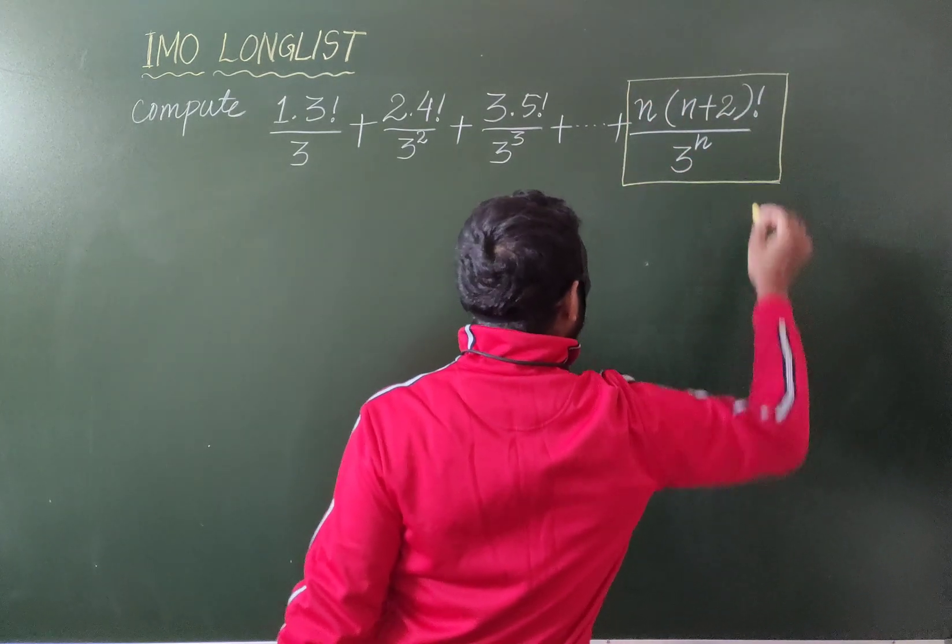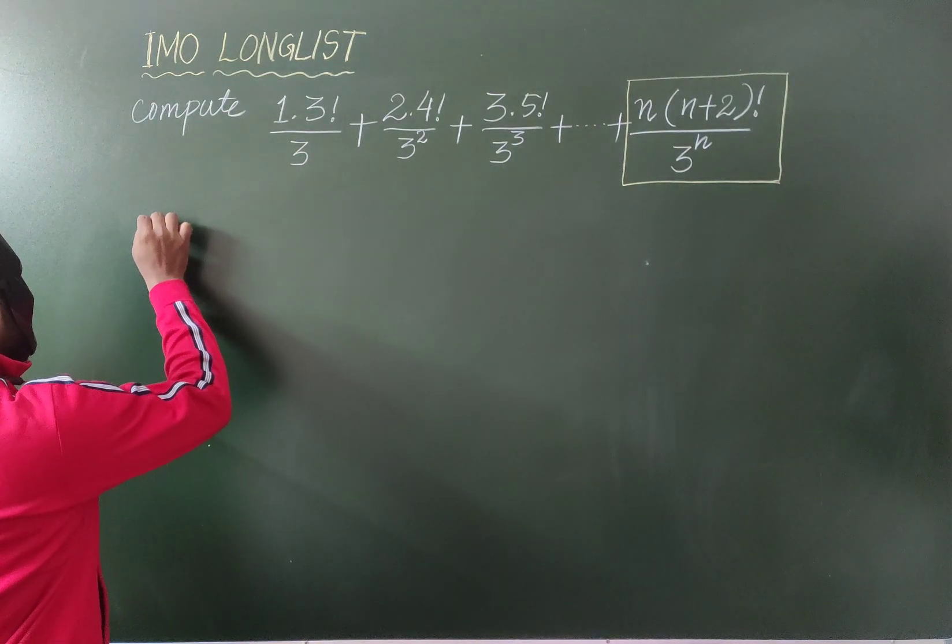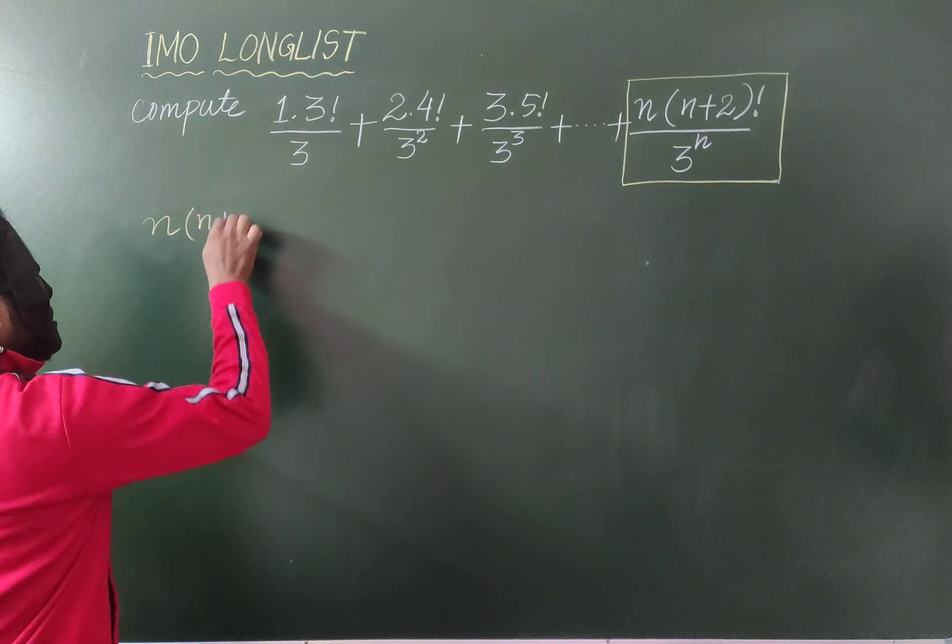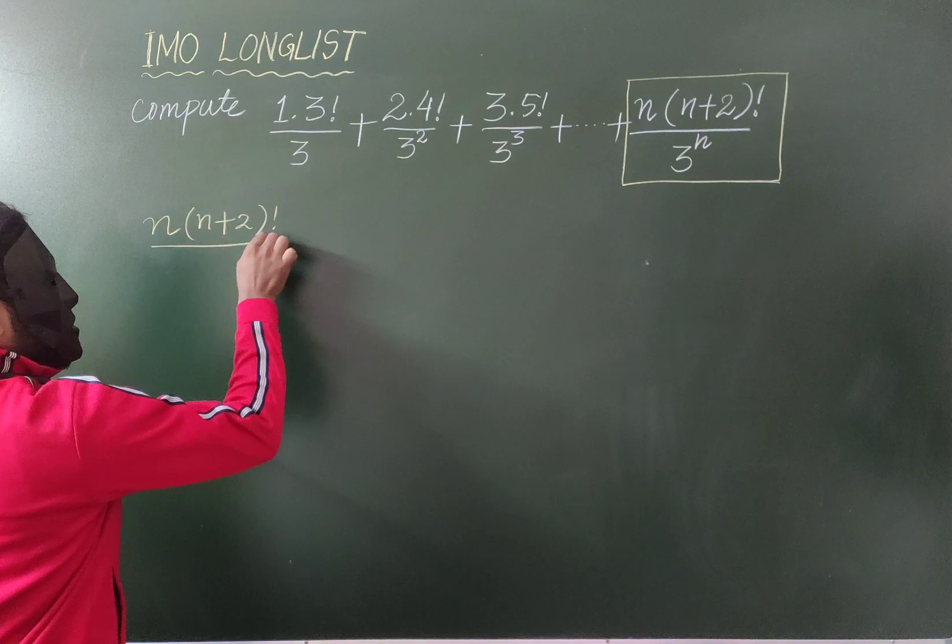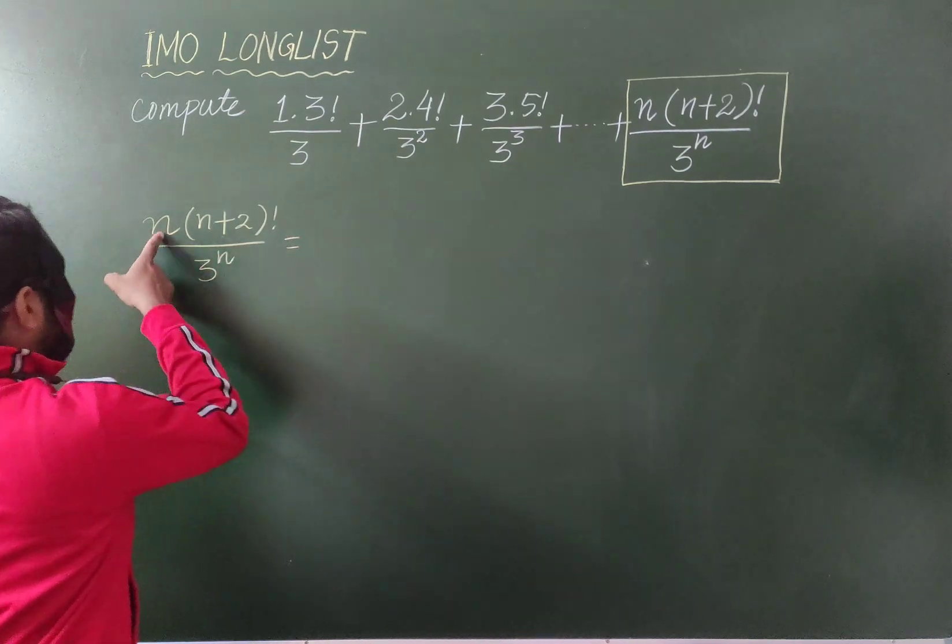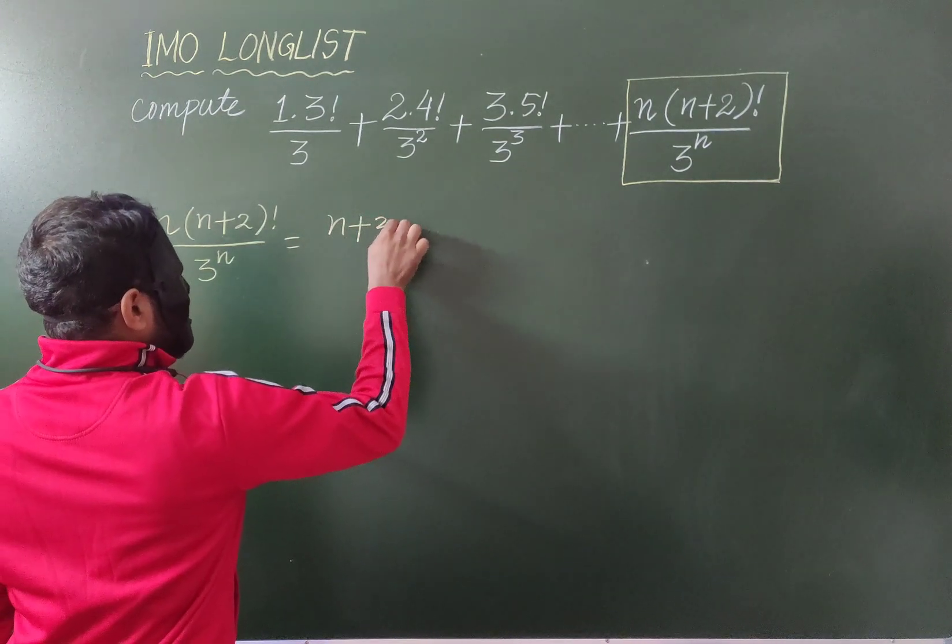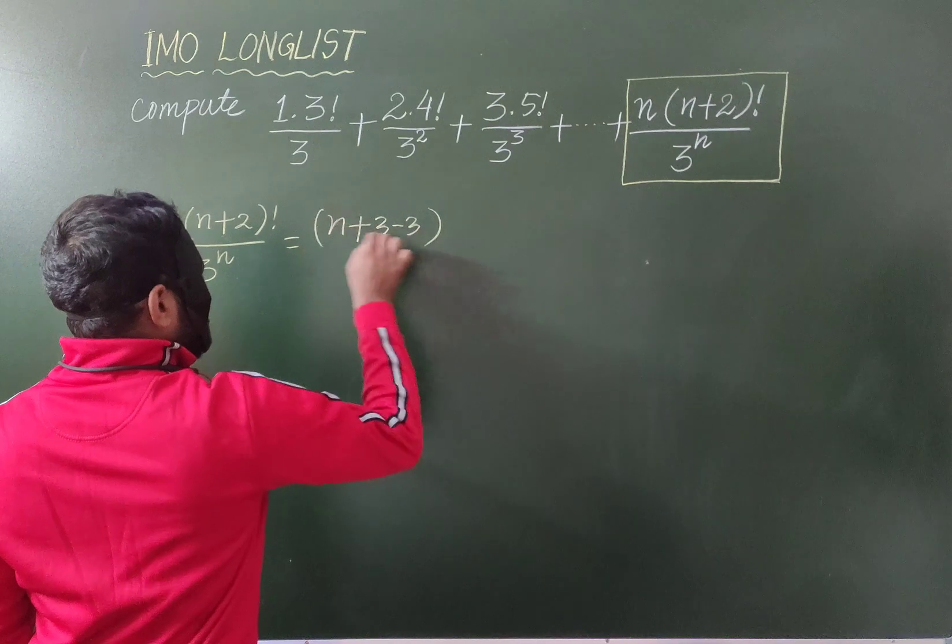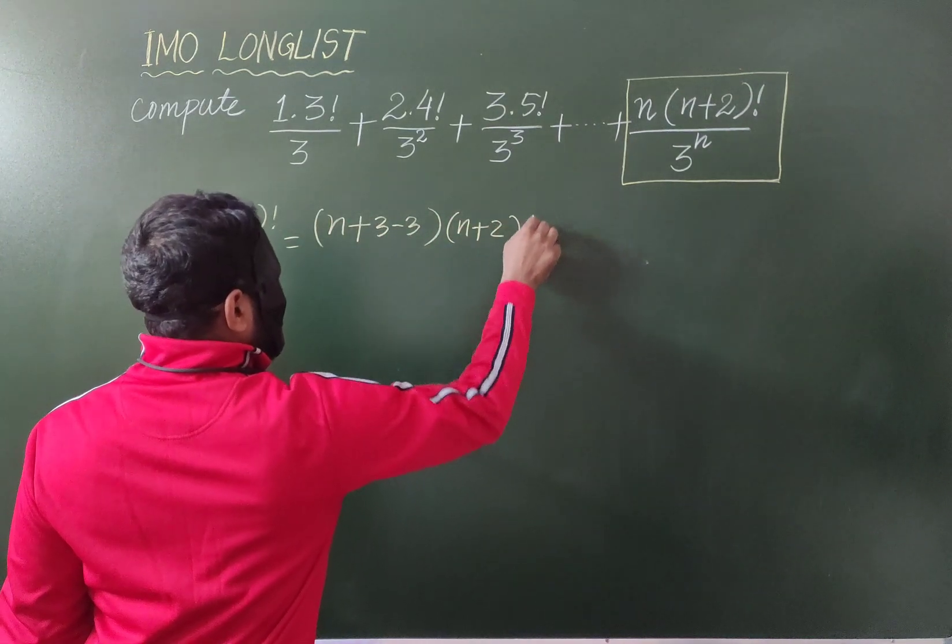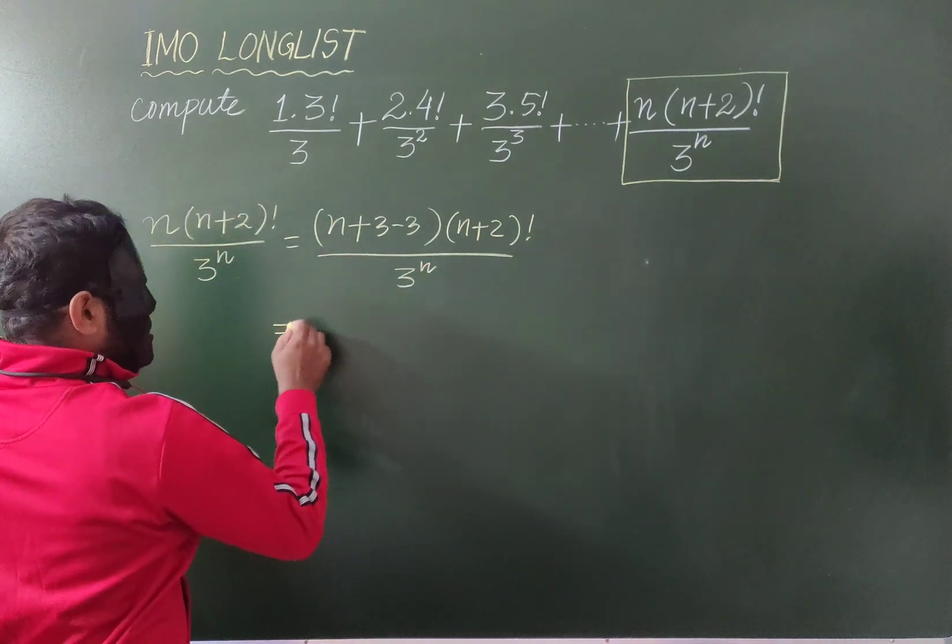How can we solve this one? Write n into n plus 2 factorial by 3 to the power n. If I add and subtract 3 in this term, that is n plus 3 minus 3.